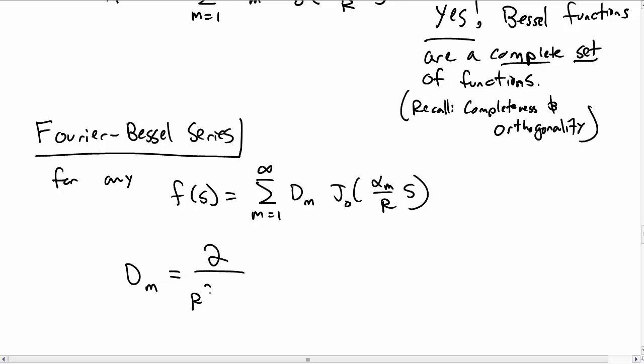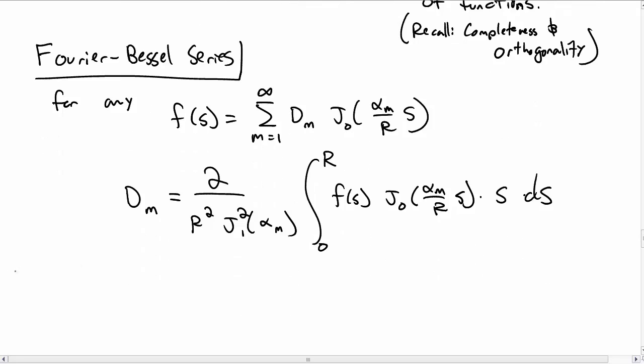The coefficients d sub m can be calculated according to this. So that's j sub 1, so that thing is not 0. The alpha sub m's are only 0's of j 0. The integral from 0 to r of our function times the 0th Bessel function times s ds. There has to be an s ds in there.